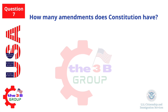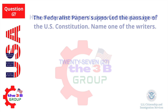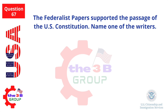How many amendments does the Constitution have? Twenty-seven. The Federalist Papers supported the passage of the U.S. Constitution — name one of the writers.